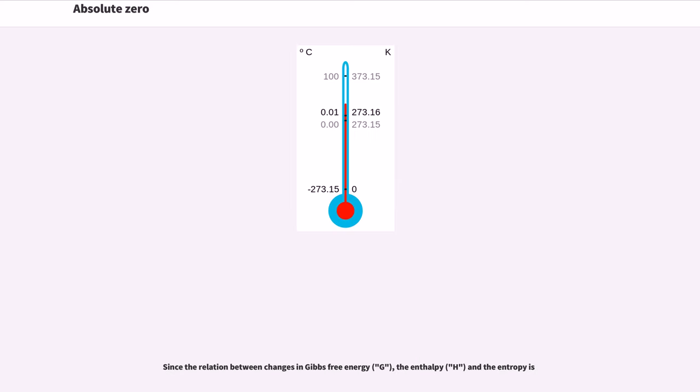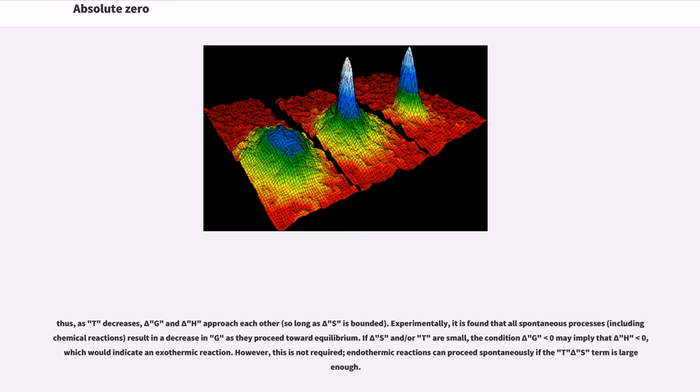Since the relation between changes in Gibbs free energy G, the enthalpy H, and the entropy is delta G equals delta H minus T delta S, thus, as T decreases, delta G and delta H approach each other, so long as delta S is bounded.